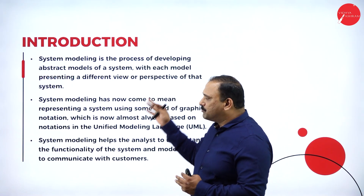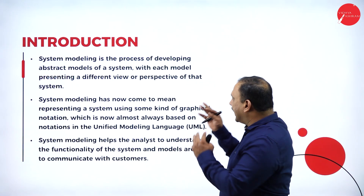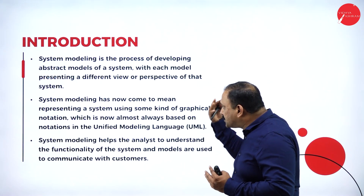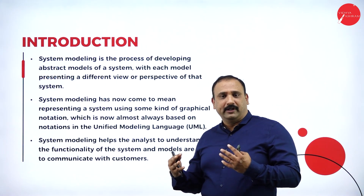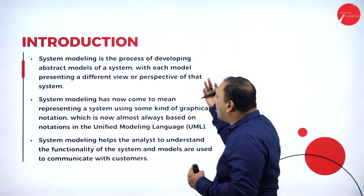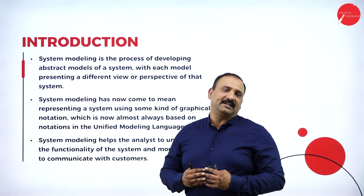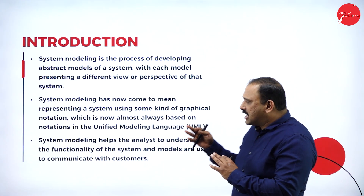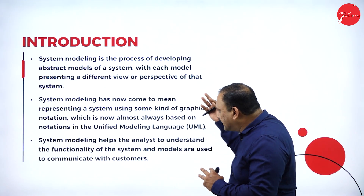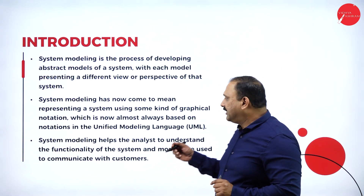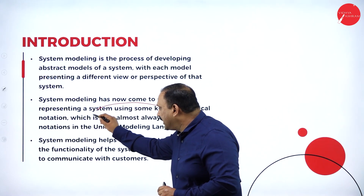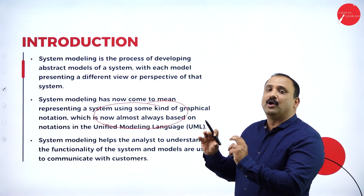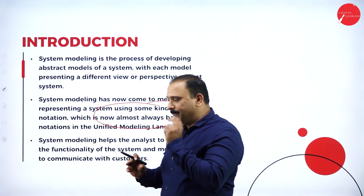What is system modeling exactly? It is the way by which we develop abstract models, with each model representing a different view or perspective of that system. System modeling now comes in terms of representing a system with a kind of graphical notation, which is very important, almost based on the Unified Modeling Language, or what we call UML.